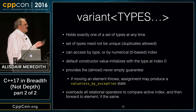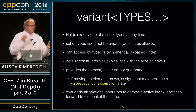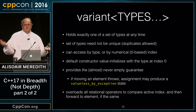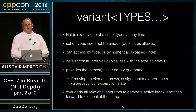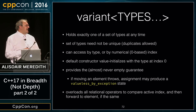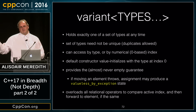std::variant is an interesting type that didn't go through the TS process — it was missed from Fundamentals 2 TS and would have been a slam dunk for Fundamentals 3. But given all other vocabulary types are shipping in C++17, and significant design work was done, there was a strong desire to ship it in the same vehicle. There was also concern that shipping any without variant would lead people to overuse any where variant was the right answer.